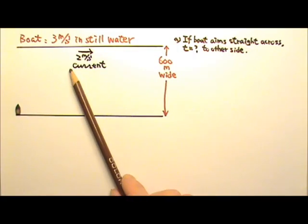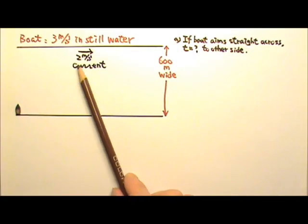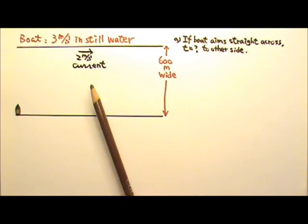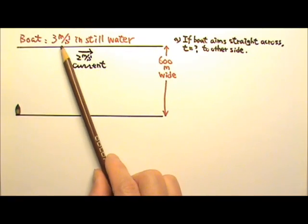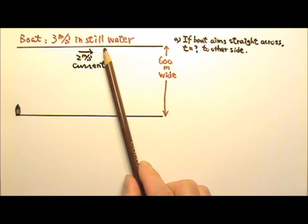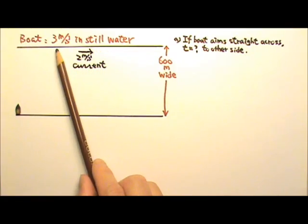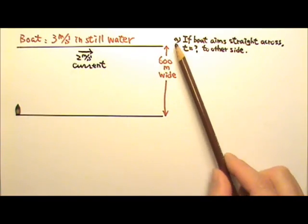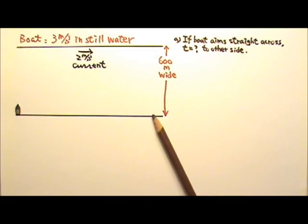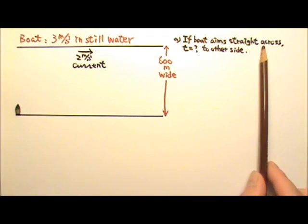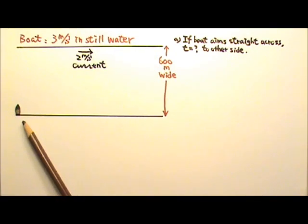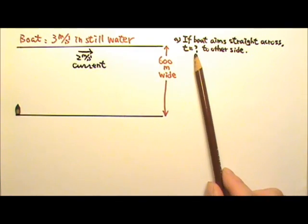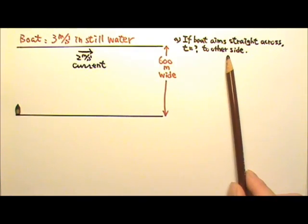Here you have a river with a current at 2 meters per second and a boat that can travel at 3 meters per second in still water, which means this 3 meters per second is the speed of the boat relative to the river water. This time the boat is going to cross this 600-meter wide river. If the boat aims straight across, how long does it take to reach the other side?